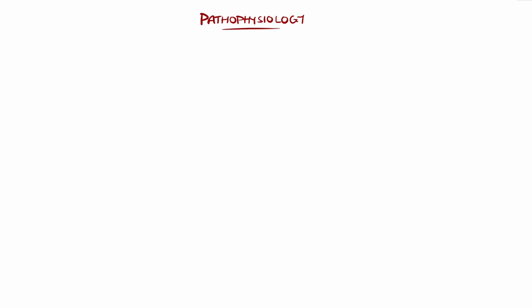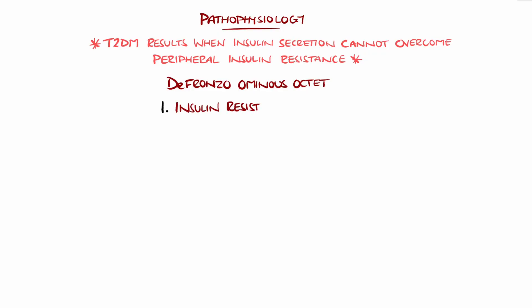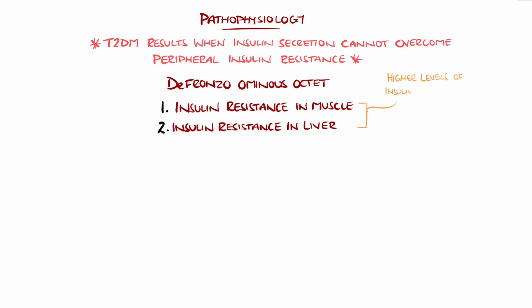The pathophysiology is complex and not entirely understood. However, type 2 diabetes generally arises when insulin secretion is inadequate to overcome peripheral insulin resistance, particularly in the liver, skeletal muscle, and adipose tissue. DiFronzo's ominous octet illustrates the eight pathophysiological defects that contribute to the hyperglycemia. First is insulin resistance in muscle, because impaired glucose uptake leads to hyperglycemia, and hepatic insulin resistance, which leads to increased hepatic glucose output due to the failure of insulin to suppress gluconeogenesis. Overall, peripheral tissue has become less responsive to insulin, necessitating higher insulin levels to achieve glucose uptake and reduce blood glucose levels.